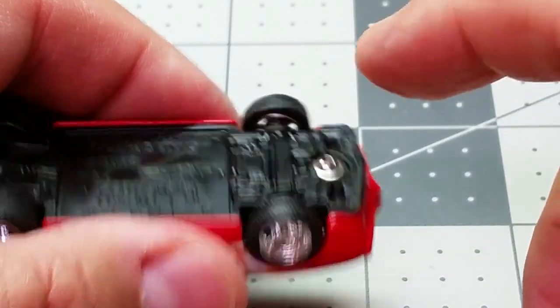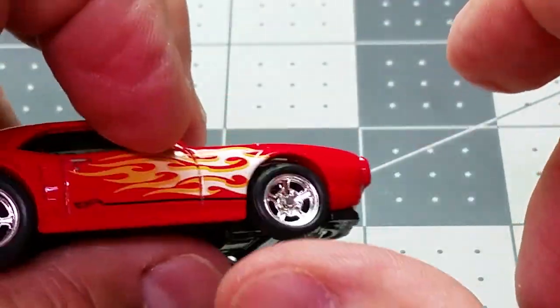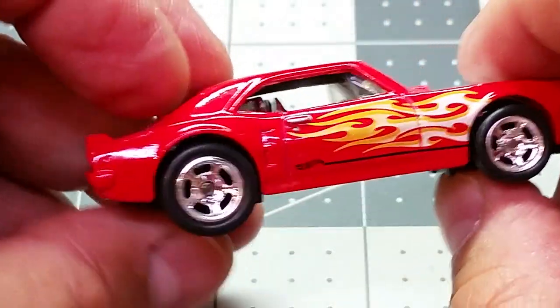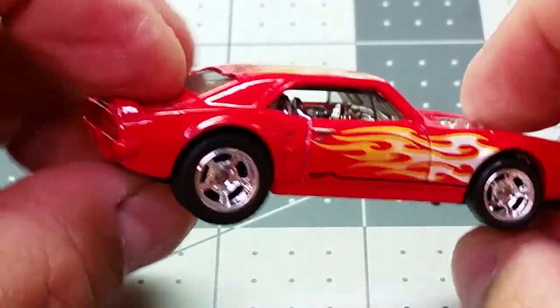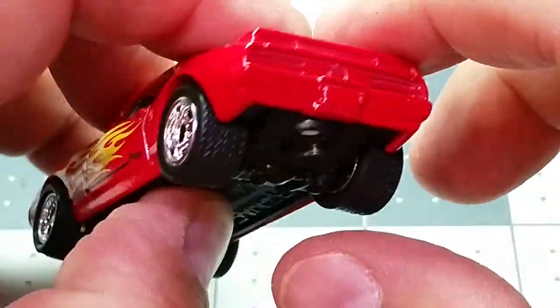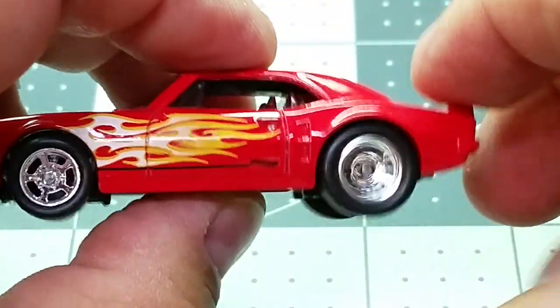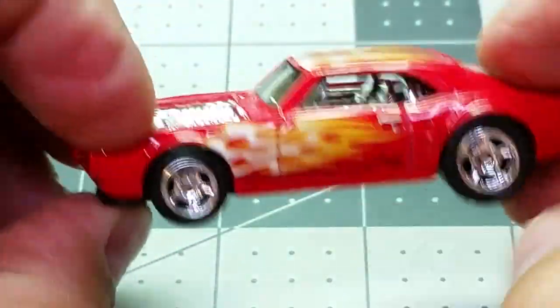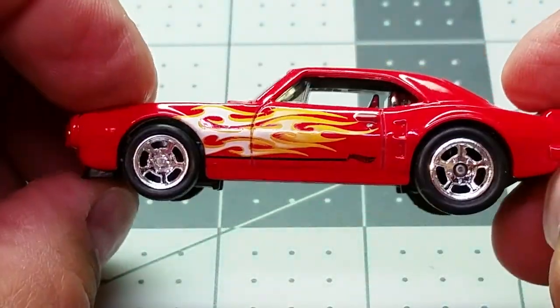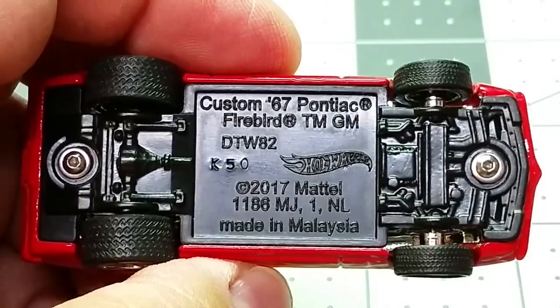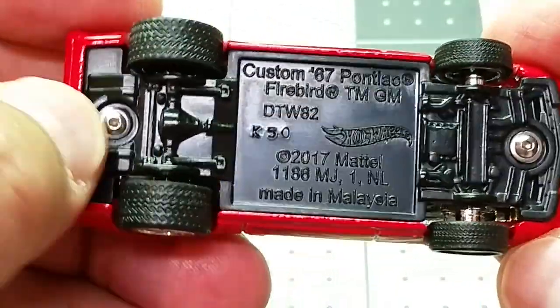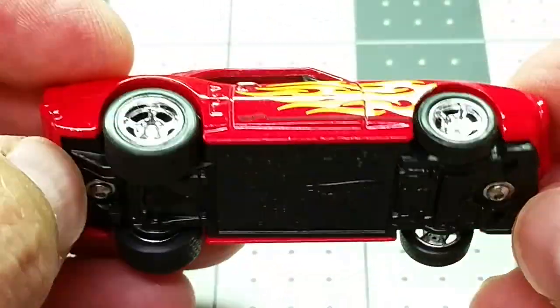Then I always check my wheels again, make sure nothing's binding. In this case everything is spinning nicely. You can already tell this looks much better than the original wheels. We got both screws in place and that's pretty much it.